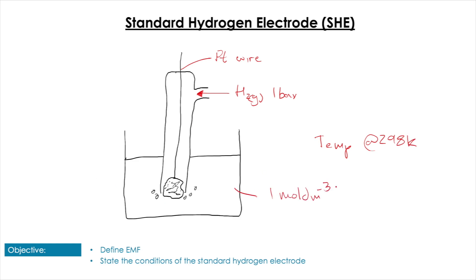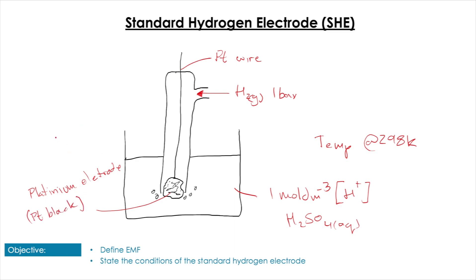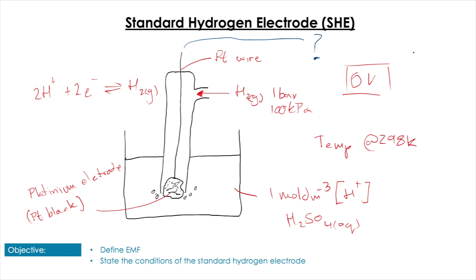The temperature is set at 298 K for STP, and we have a 1 mol dm⁻³ solution of H⁺. In solution we have a platinum black electrode - platinum black is a very high surface area electrode which is not reactive - and this allows us to set up the equilibrium of H⁺ going to H₂ gas. This half-cell is set at a value of zero volts.